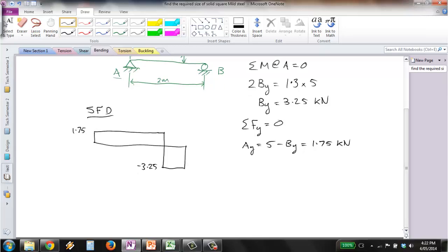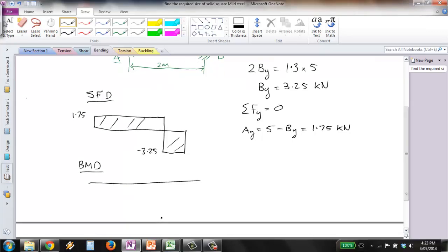That's the shear force diagram, and then we can create a bending moment diagram. Pretty simple: the maximum bending moment will be at the point where the load's applied. It's simply the area of either of these two sections, which turns out to be 2.275kN·m. We then just have linear lines coming to that point.